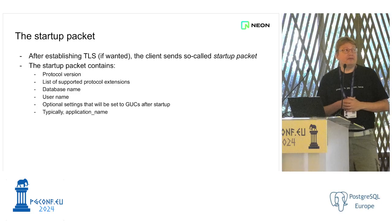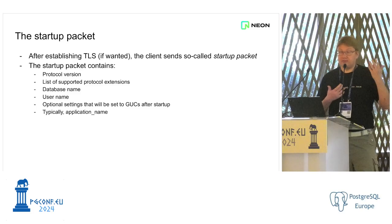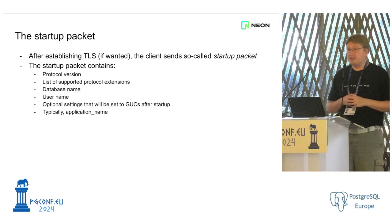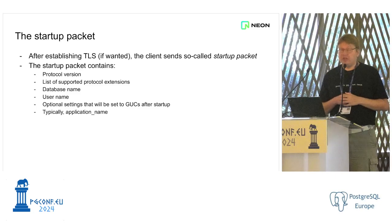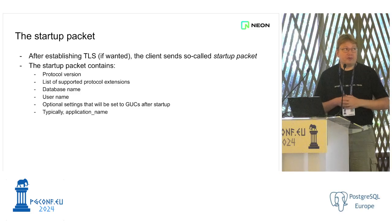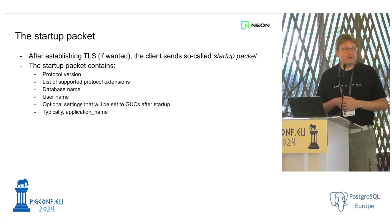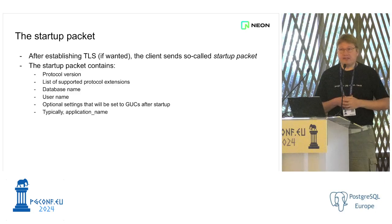The next thing the client sends is the startup packet. This is an important message that contains the protocol version you're speaking — which is always 3 at the moment — and the list of supported protocol extensions, which is always empty at the moment. It contains the database name and username, which the server uses to match against pg_hba.conf to determine whether you're allowed to connect and what authentication to use. You can also have optional settings like application name — please set it, it's very useful for looking at logs. Other settings include client encoding, timezone, date style, and interval style.